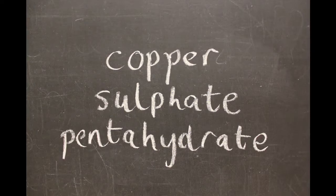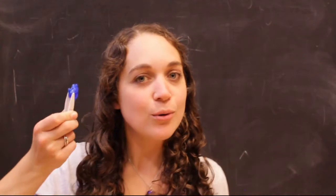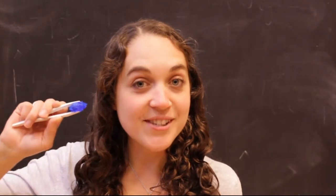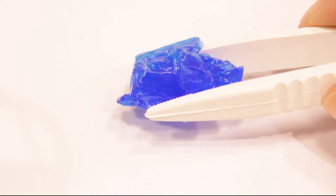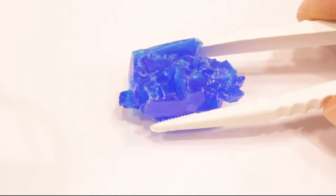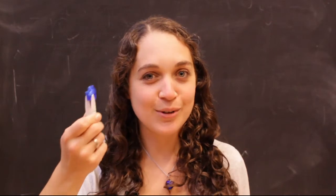This is a crystal of copper sulphate pentahydrate. Now maybe you've done some work with copper sulphate at school, perhaps you've used it in a chemistry experiment, maybe you've even grown your own crystals. And they're really beautiful, they're this gorgeous bright blue colour and they are really lovely shapes, but they've also got a really amazing property that I want to show you today.